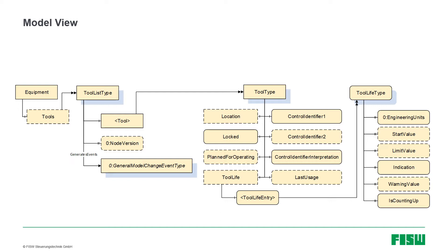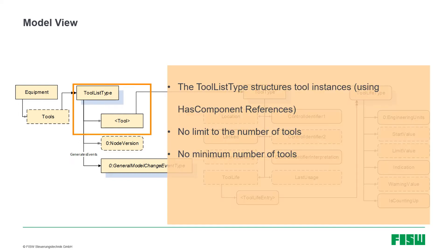Each of those tools can have a tool life entry, but we will not go into that detail further today. The main takeaways from the model are that the tool list type structures the tools with has-component references, there is no limit to the number of tools, there can be as many nodes as needed, and there is also no minimum number of tools — so an empty list is perfectly fine.